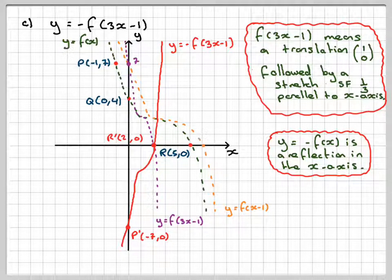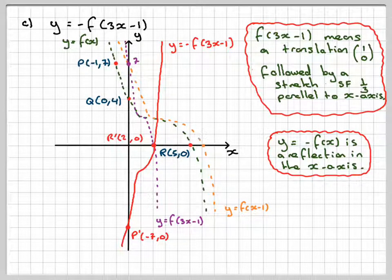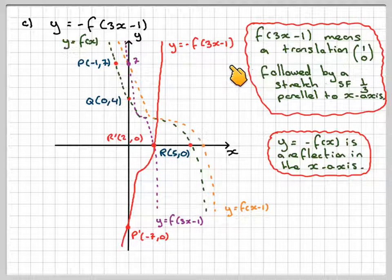This bit goes like this, it will go up here, and then this bit will sort of go down. So the red graph here represents y equals minus f of 3x minus 1.